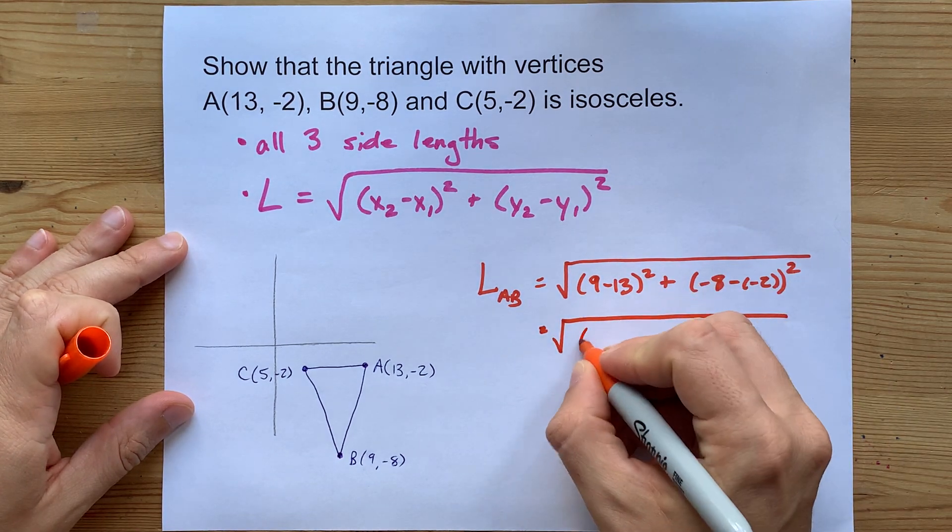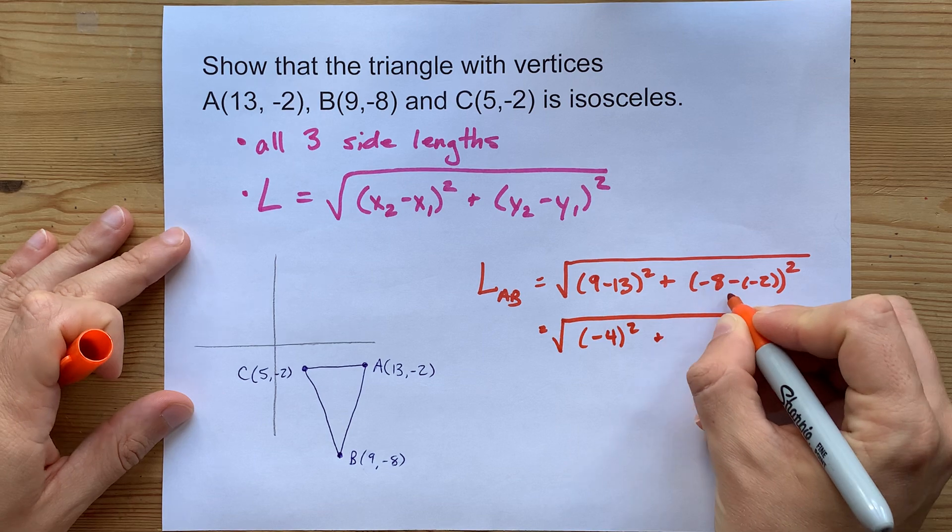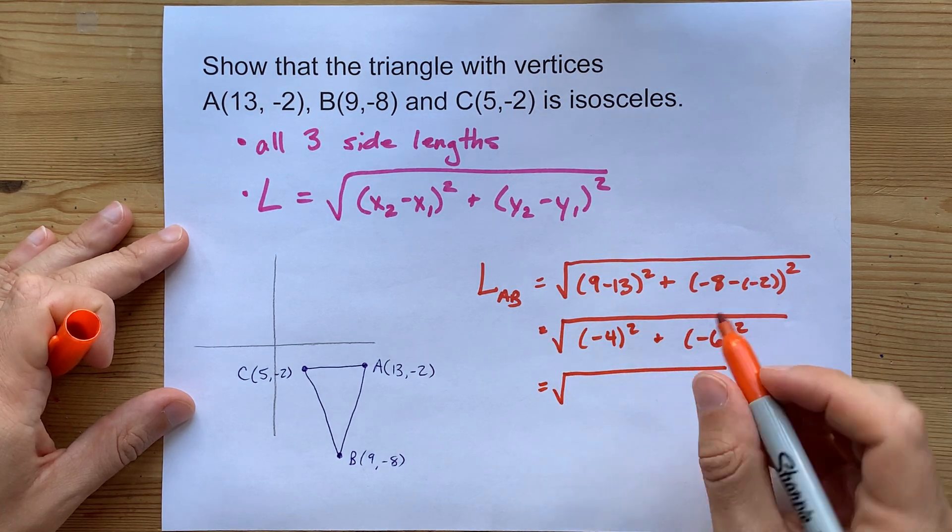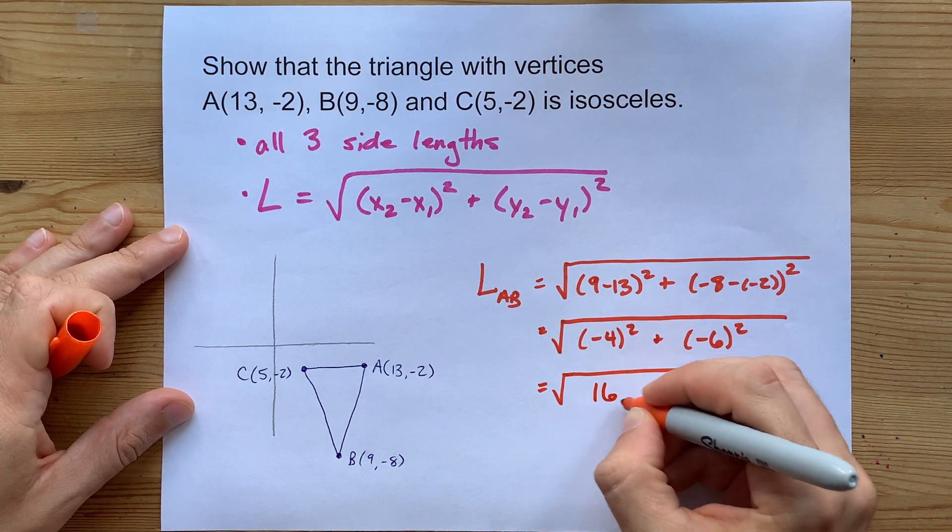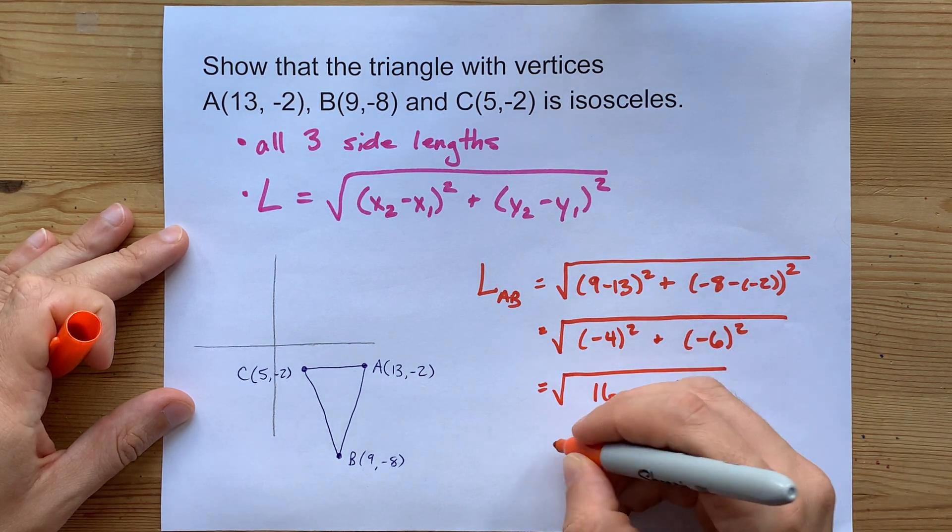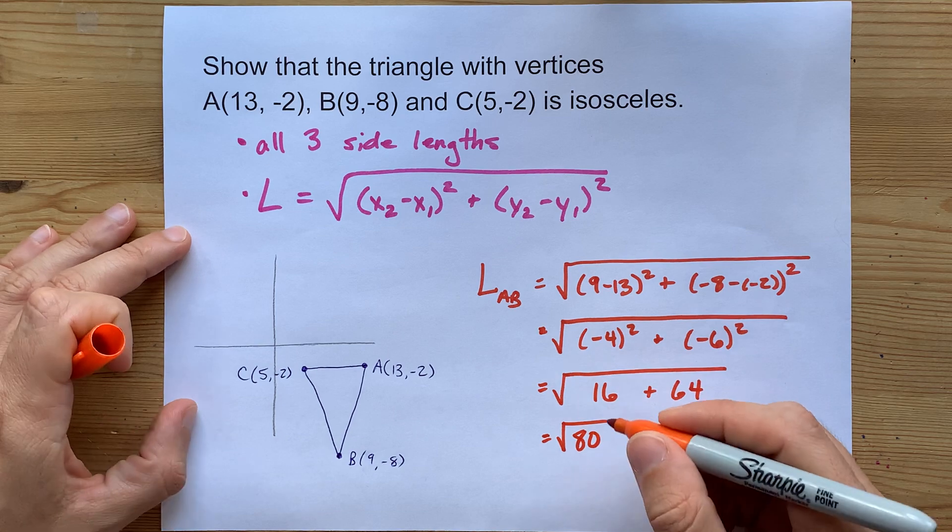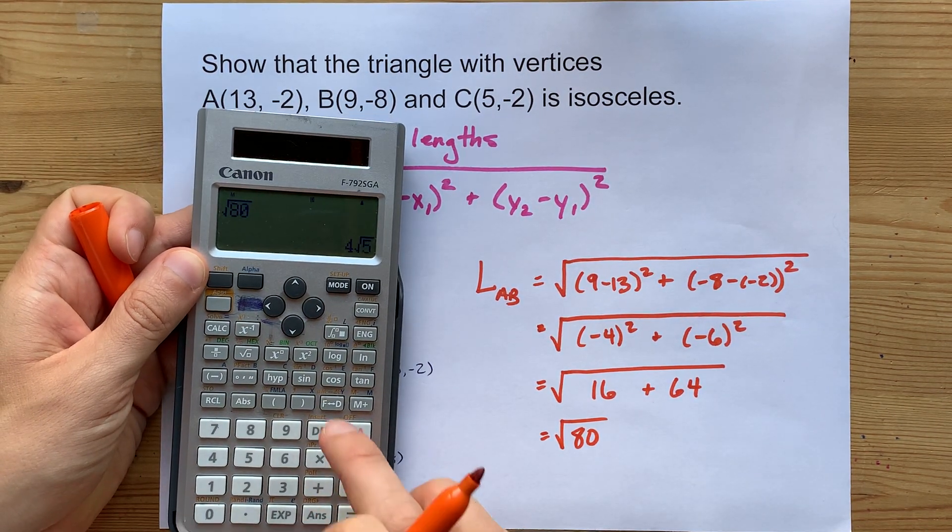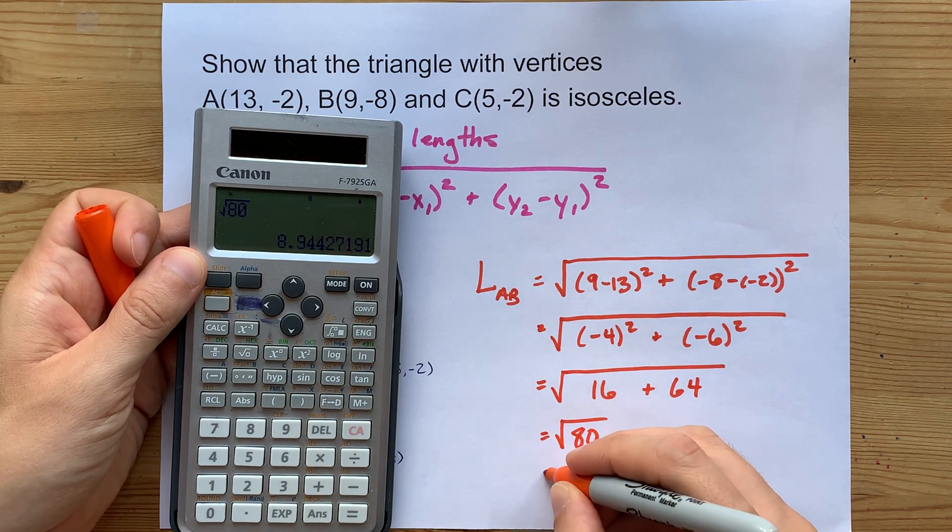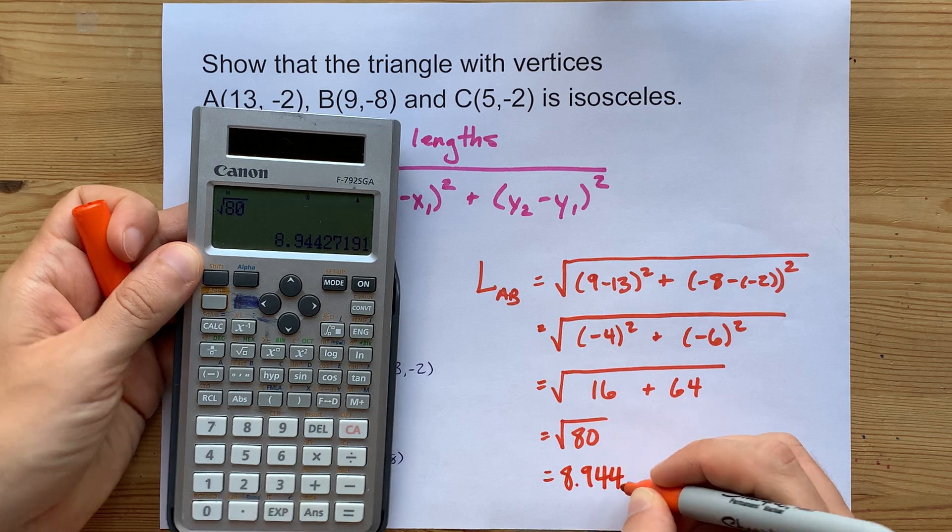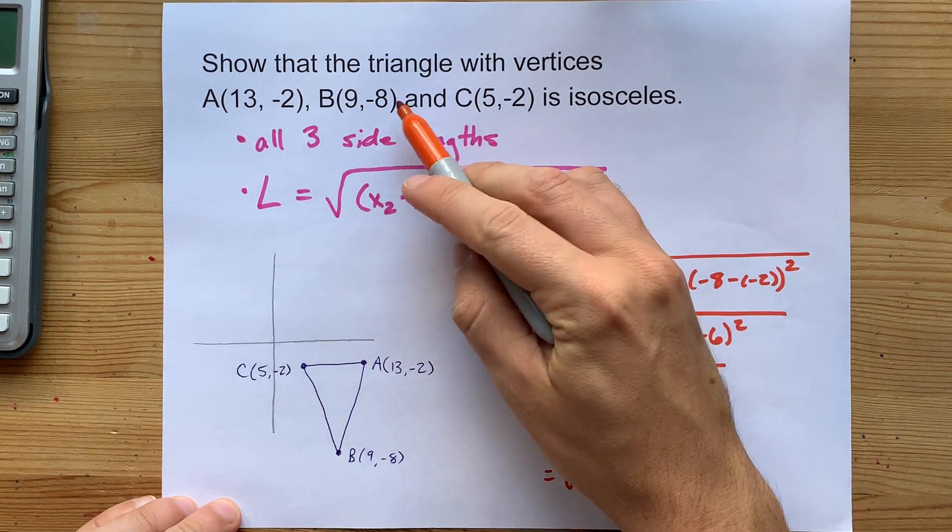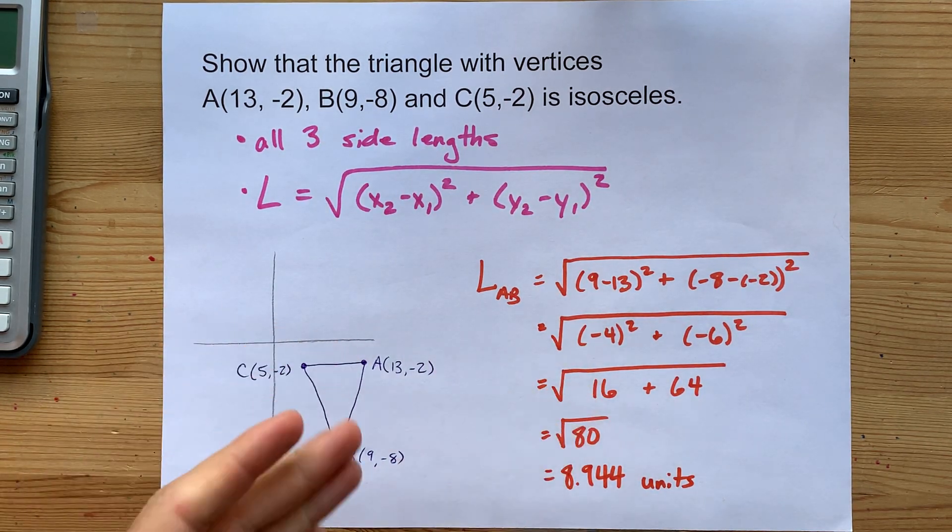Anyways, 9 minus 13 is -4. Negative 8 plus 2 is -6. Now here comes the squaring. When you square a negative, it becomes positive. This is 16 and also 64. That gives me the square root of 80. Now that's what we call an exact solution because you haven't done any rounding. But let's use a calculator and get the actual number for the square root of 80: 8.944. So the length from A to B is 8.944 units. We say units because we weren't given any actual units here.